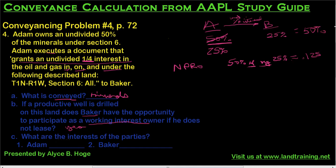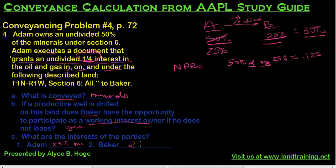If he had said '50% of 25%' we'd have a different answer. But he's not saying a quarter interest of my interest — he's saying I'm conveying 25%. That means Baker gets 25%, and since Adam only owned 50%, that leaves him with the remaining 25%, which equals a total of 50%. So the interests of the parties are: Adam owns a 25% mineral interest, and Baker owns the remaining one quarter — 0.25, or 25% — mineral interest.